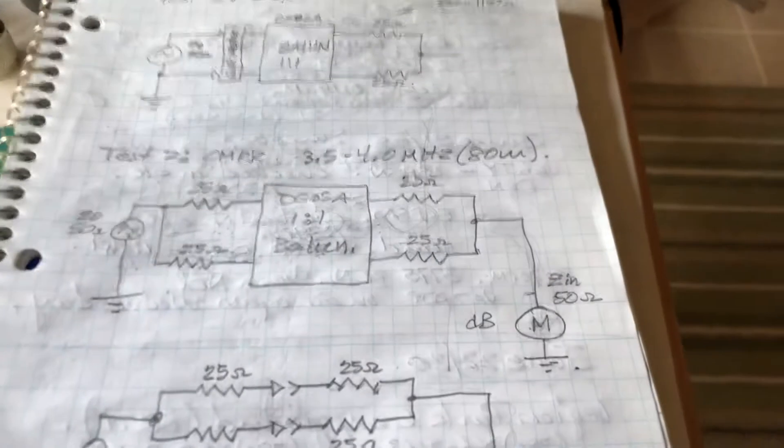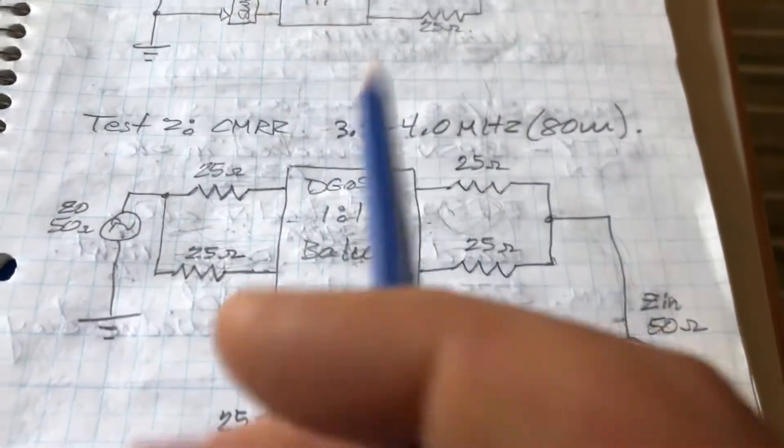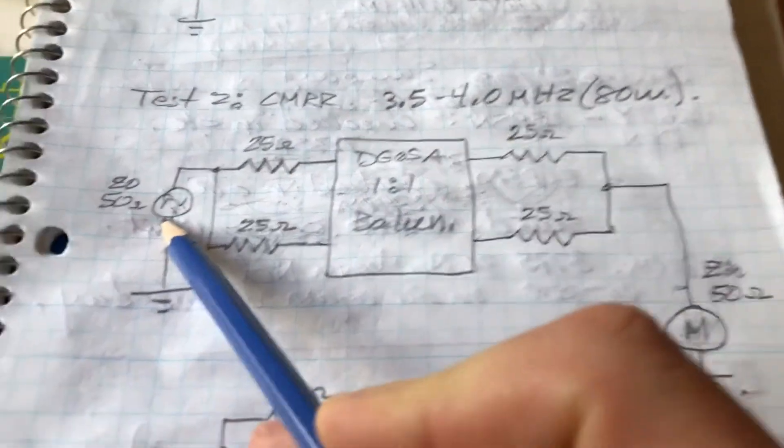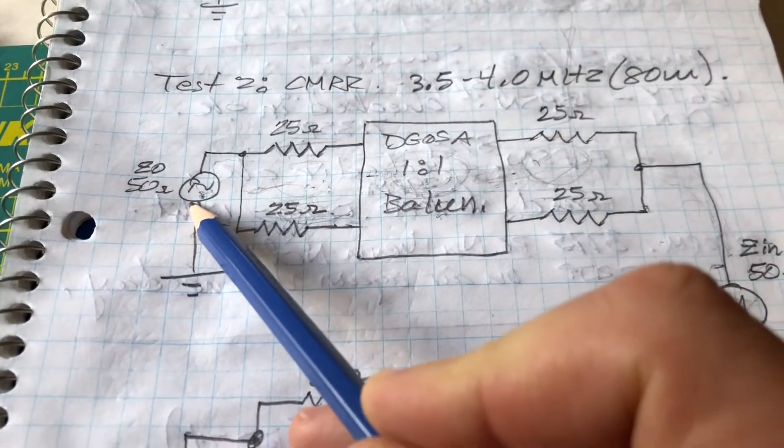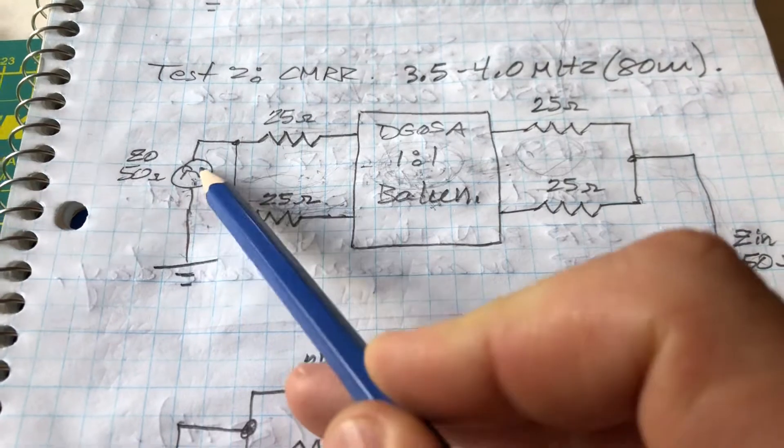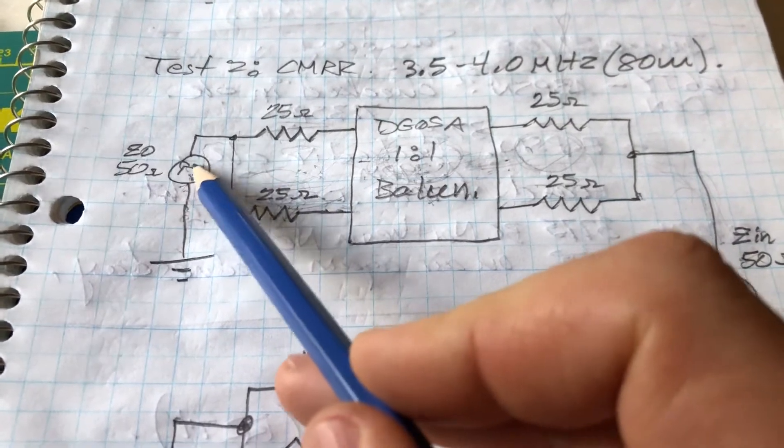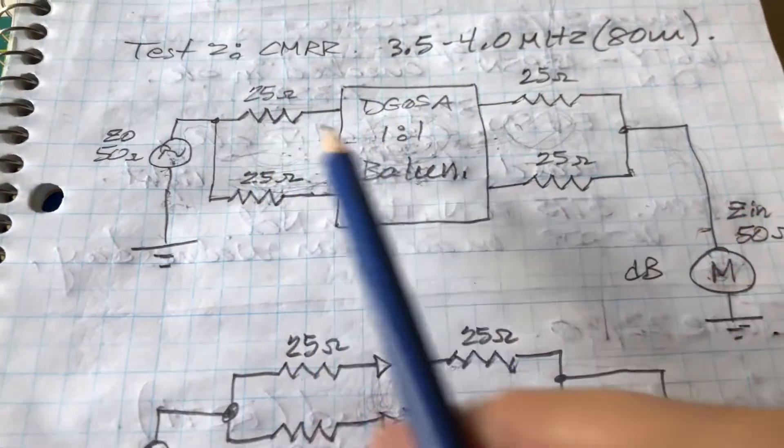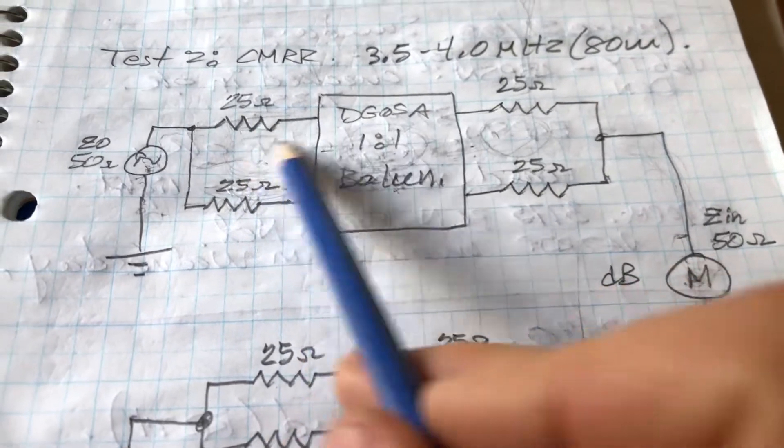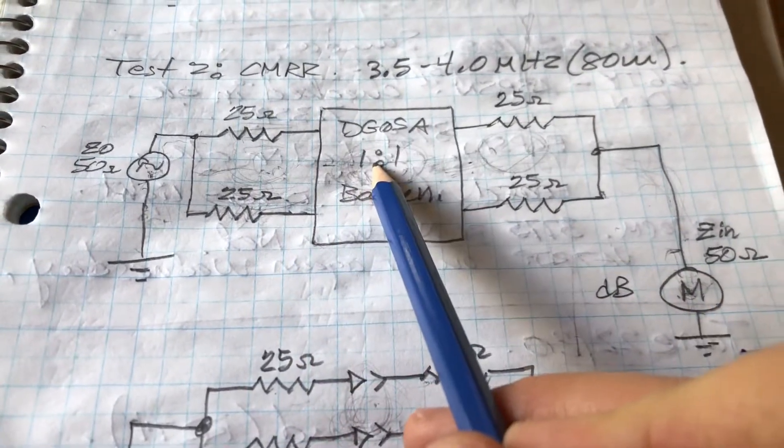So I've built a little circuit here. If you look here, this is your S11 port of the Nano VNA. I'm using it as a signal source and this is single ended. So I'm splitting it into two to feed common mode signal into the balun.